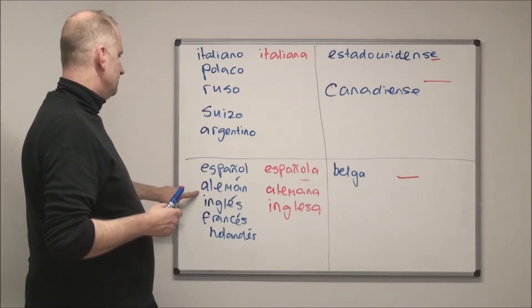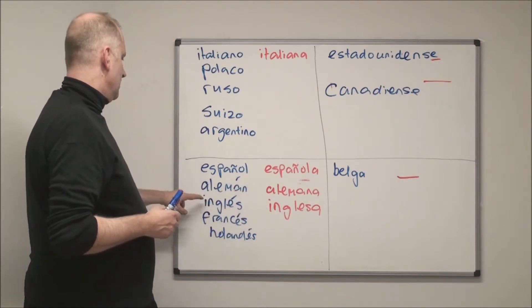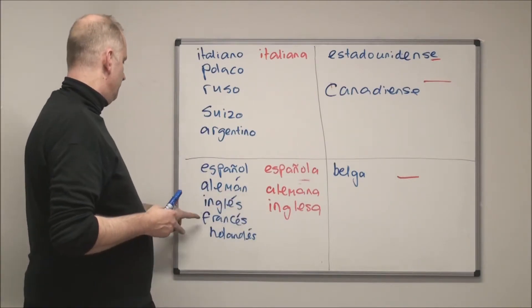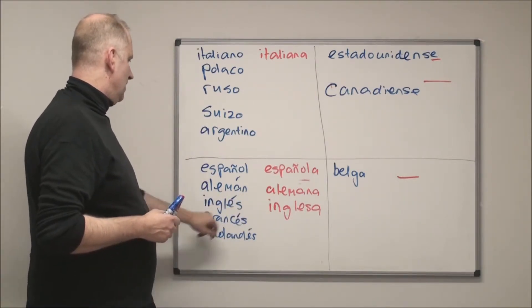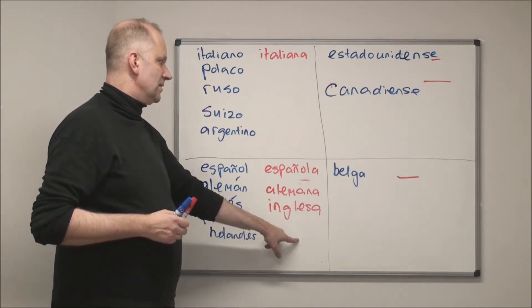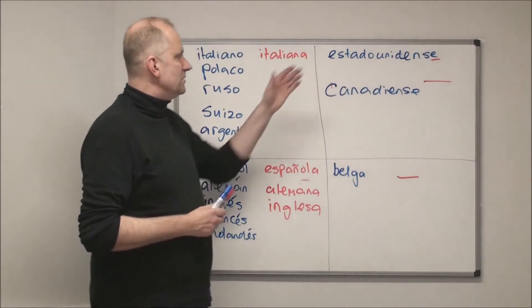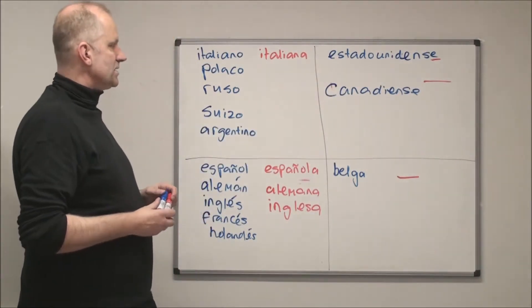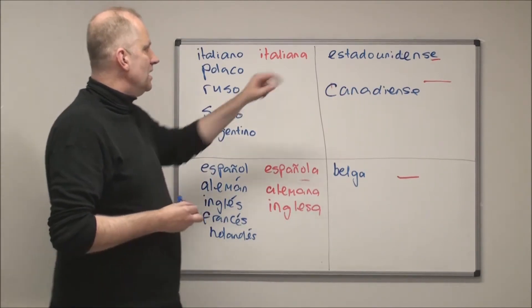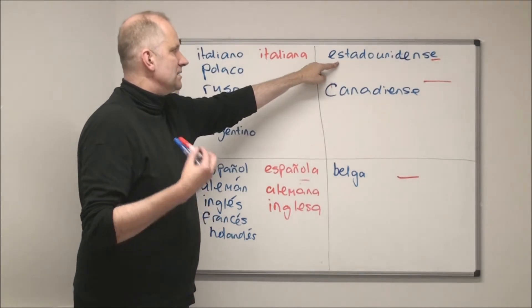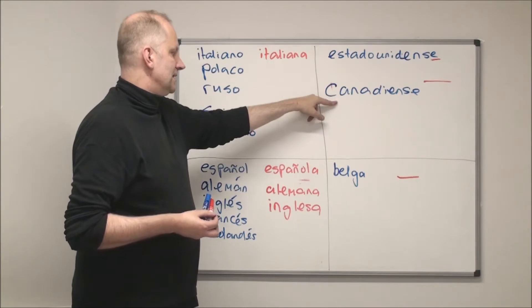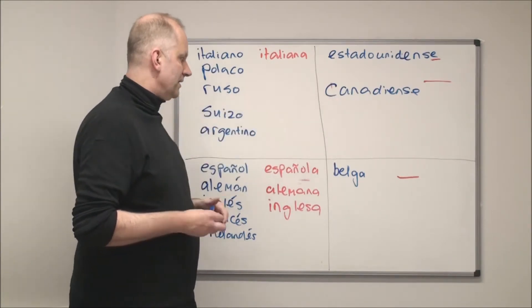'Alemán/alemana', 'inglés/inglesa', 'français/francesa', 'holandés/holandesa'. And then the easy ones ending in -e where there's only one form for male and female: 'estadounidense' and 'canadiense'. And the final one: 'belga'.